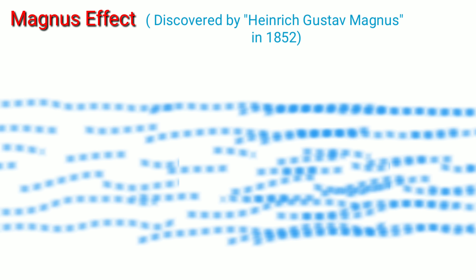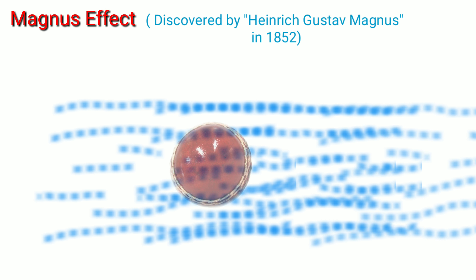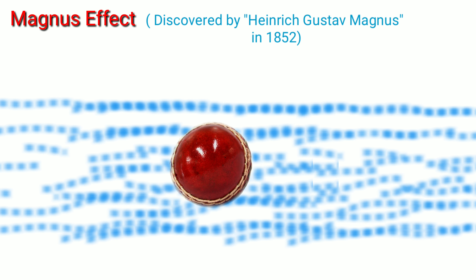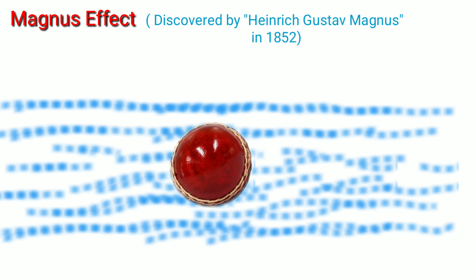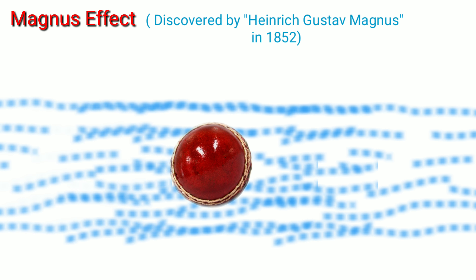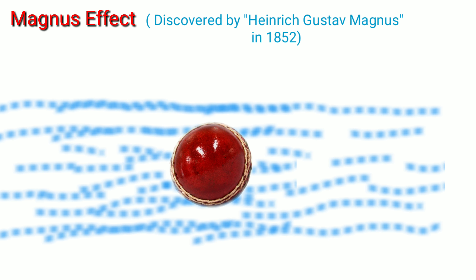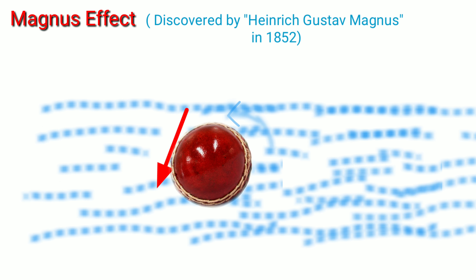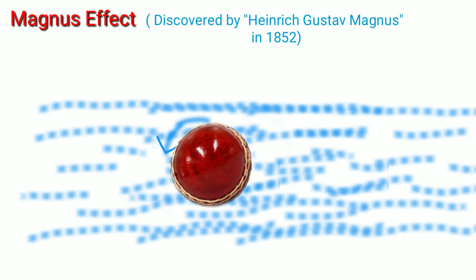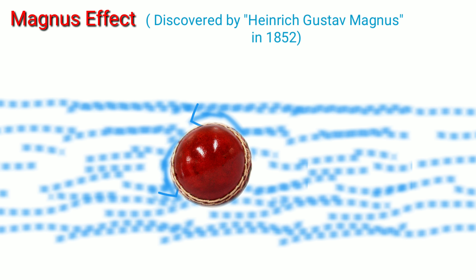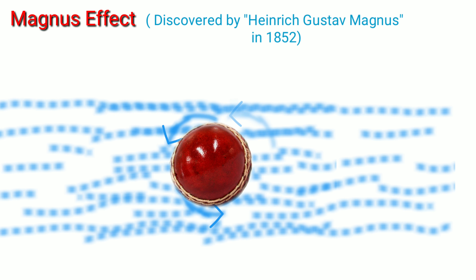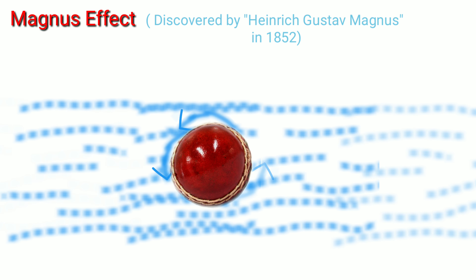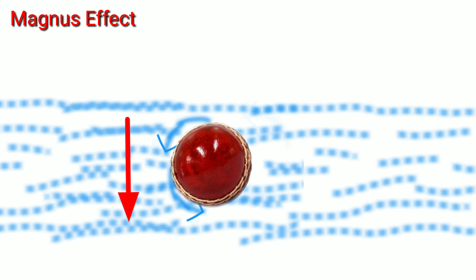But when the ball gets old, it starts to swing in reverse. And both swings are due to the Magnus effect, or Magnus force. So first, let's know about the Magnus effect.